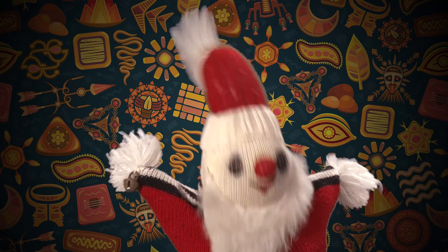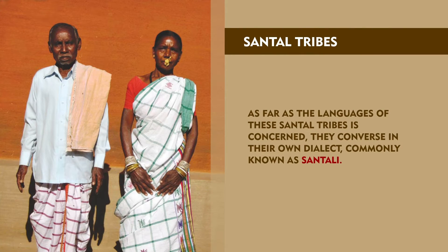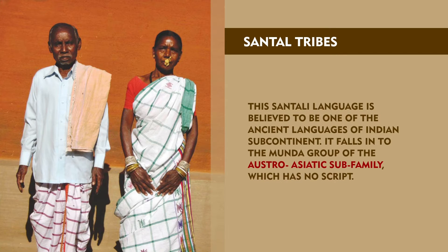We shall discuss a few of the major tribes in detail. Santal tribes: The third largest tribal communities of India are distributed in the states of Bihar, West Bengal, Orissa and Tripura. The Santal call themselves Hore, which means man. The community is divided into two groups namely Deswali Santal and Karwar. The Santal tribes converse in their own dialect commonly known as Santali. This Santali language is believed to be one of the ancient languages of the Indian subcontinent. It falls into the Munda group of the Austro-Asiatic subfamily which has no script.